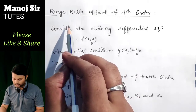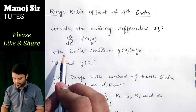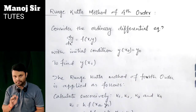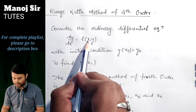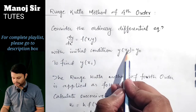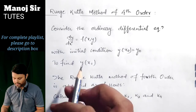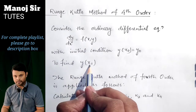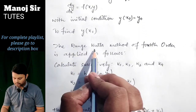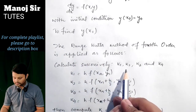Consider the ordinary differential equation dy/dx = f(x, y) with initial condition y = y₀ when x = x₀. It means in the problem we will have two things: the function f(x, y) and one initial condition, that is at x = x₀, y = y₀. Suppose you need to find the value of y when x = x₁. In that case, to apply the Runge-Kutta method of fourth order, you need to calculate successively k₁, k₂, k₃, and k₄.